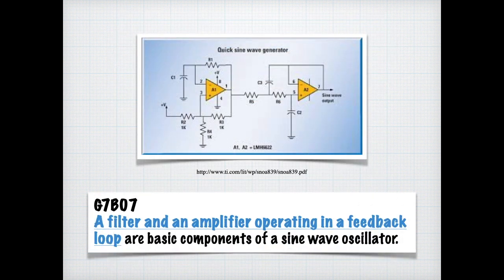Filtering can usually be accomplished by inductors and capacitors. If you notice in this schematic, there are some capacitors that are acting as filters. For the exam, you need to know that a filter and an amplifier operating in a feedback loop, the feedback you notice that the output is going back to the input side, are basic components of the sine wave oscillator.